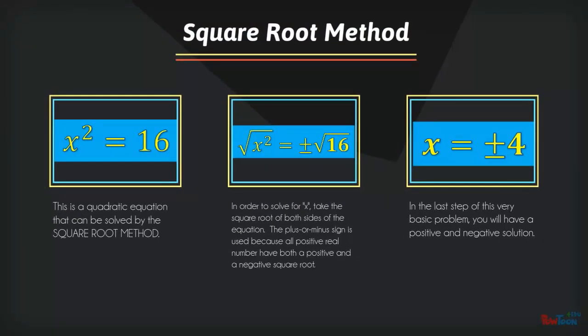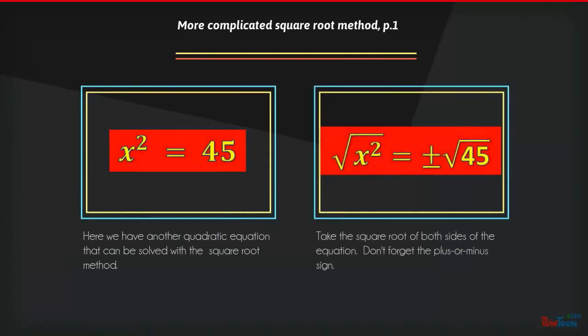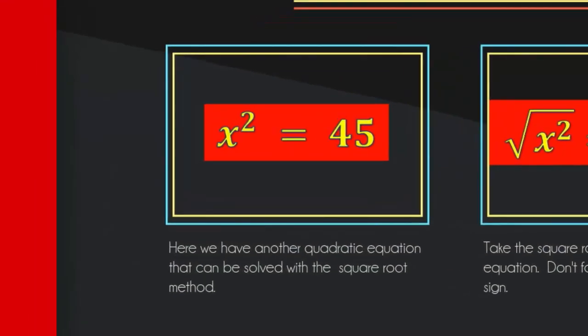Three steps for a basic equation. Now here's one that's a little more complicated. x squared equals 45. 45 is not a perfect square, so we're going to have to simplify it.